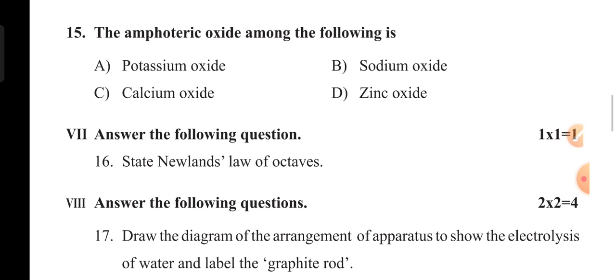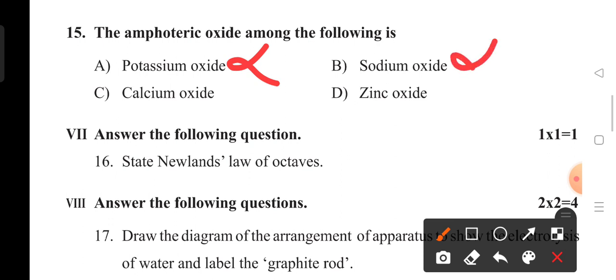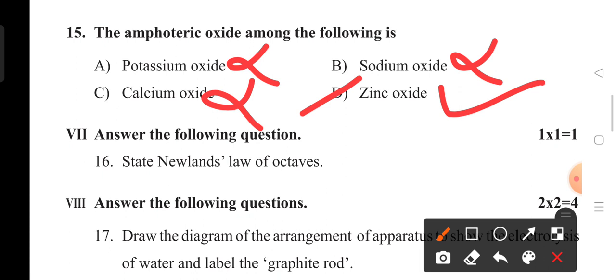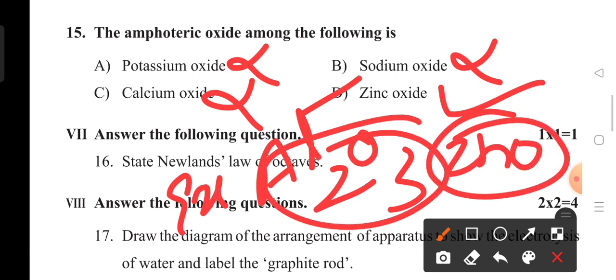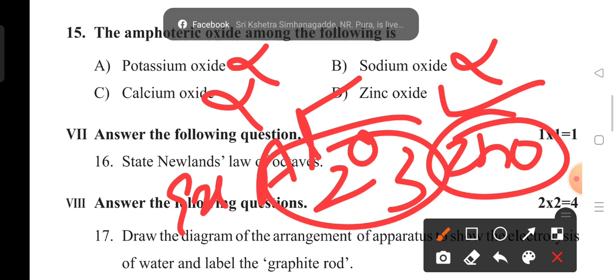The amphoteric oxide among the following: potassium oxide is not amphoteric, sodium oxide is not amphoteric, calcium oxide is not amphoteric. Zinc oxide is an amphoteric oxide because some metals act as both acid and base — they react with acids and bases to give salts and water. Examples are aluminum oxide (Al₂O₃) and zinc oxide. These are amphoteric oxides because they react with acid and also with base, each time giving salt and water. Option D, zinc oxide, is the right answer.